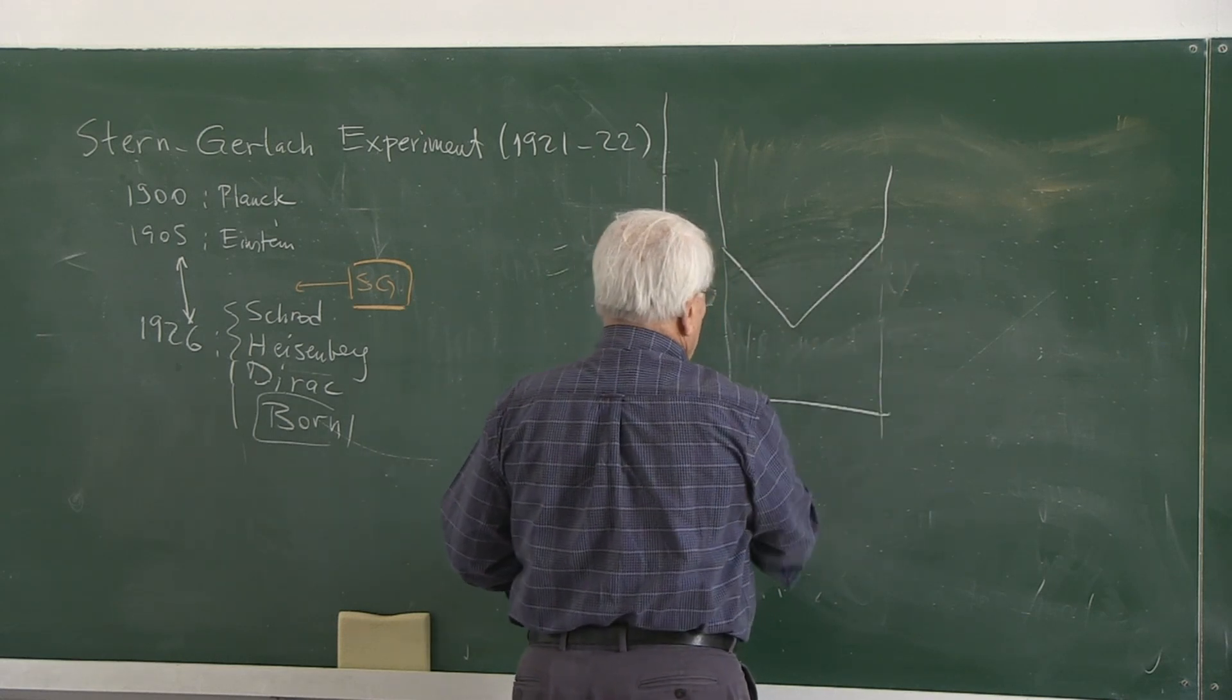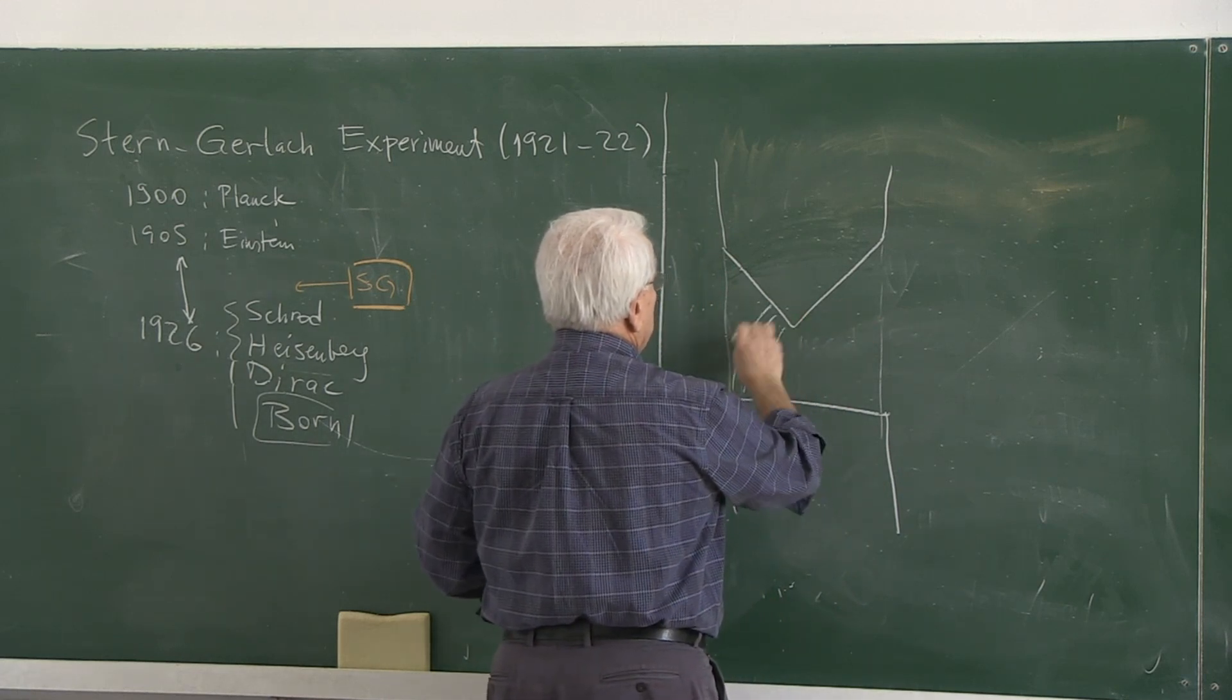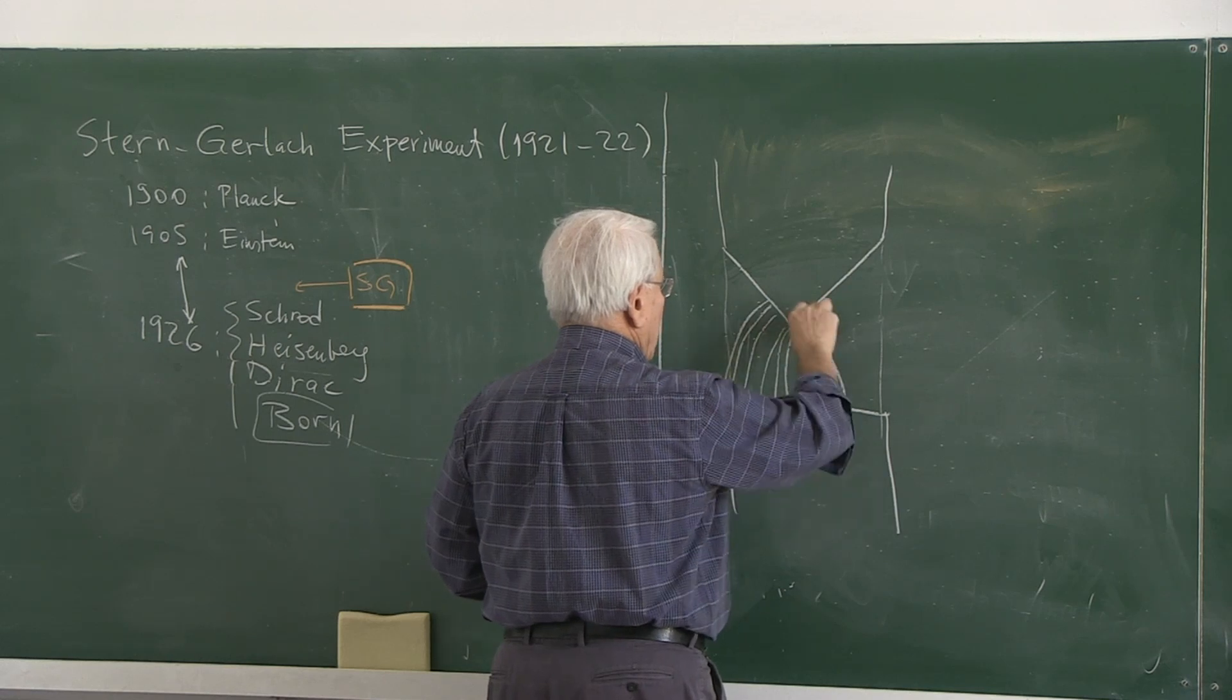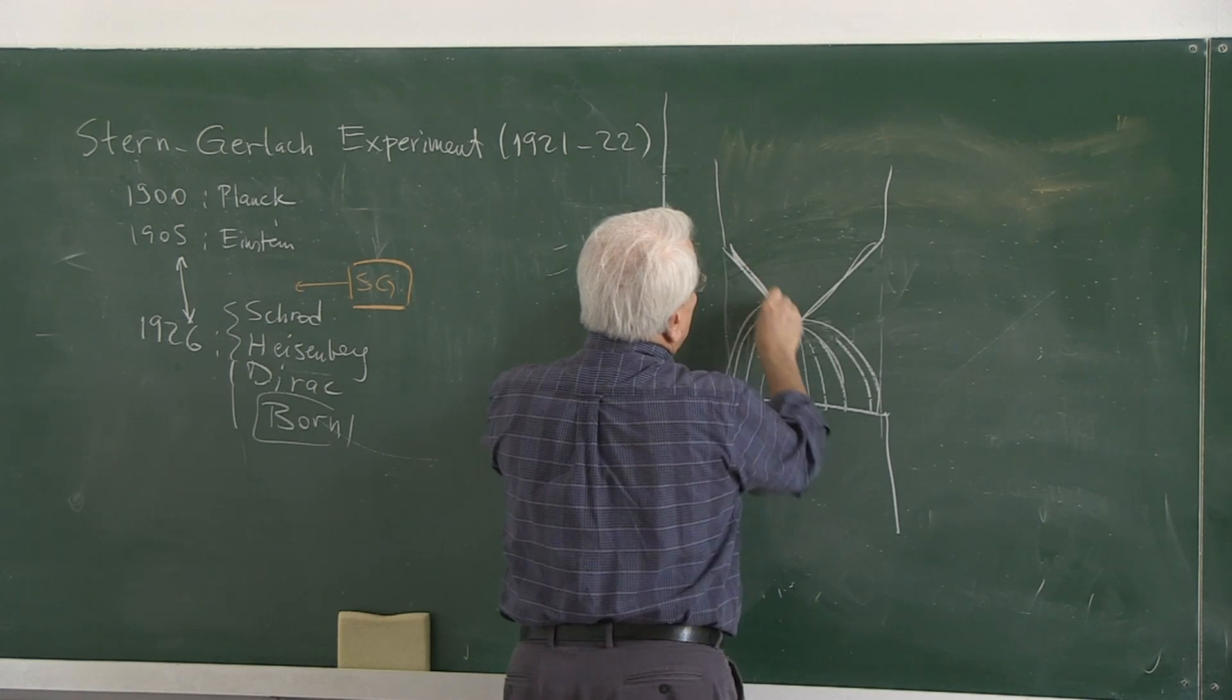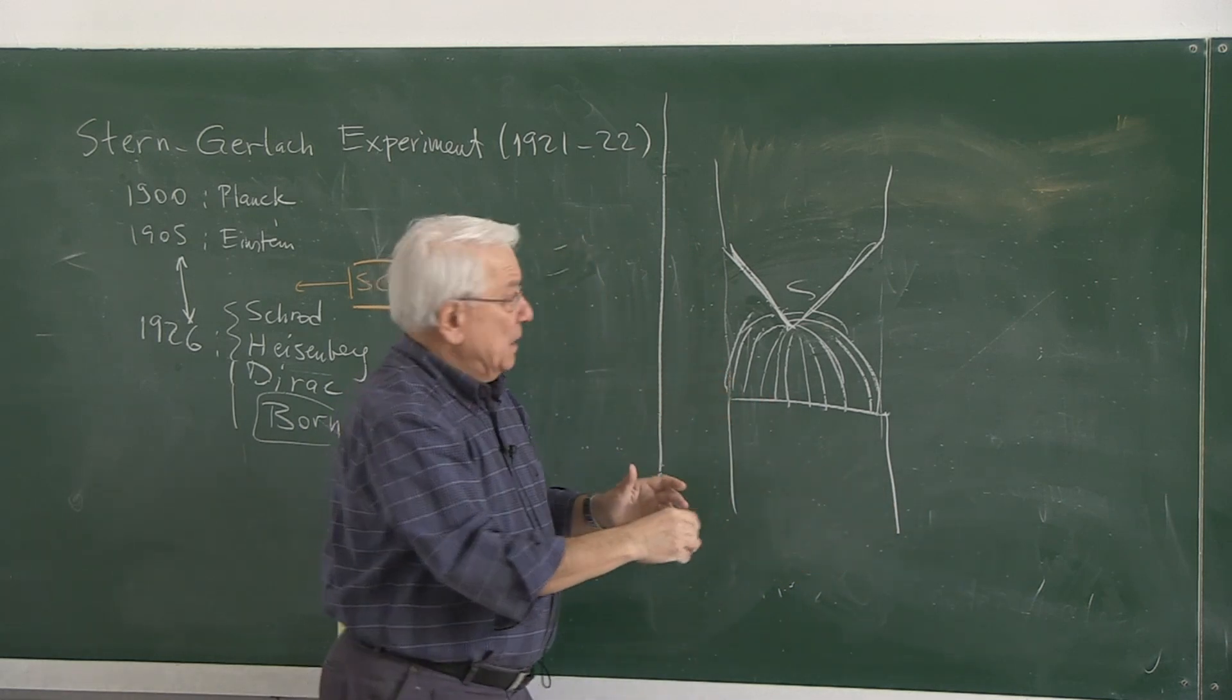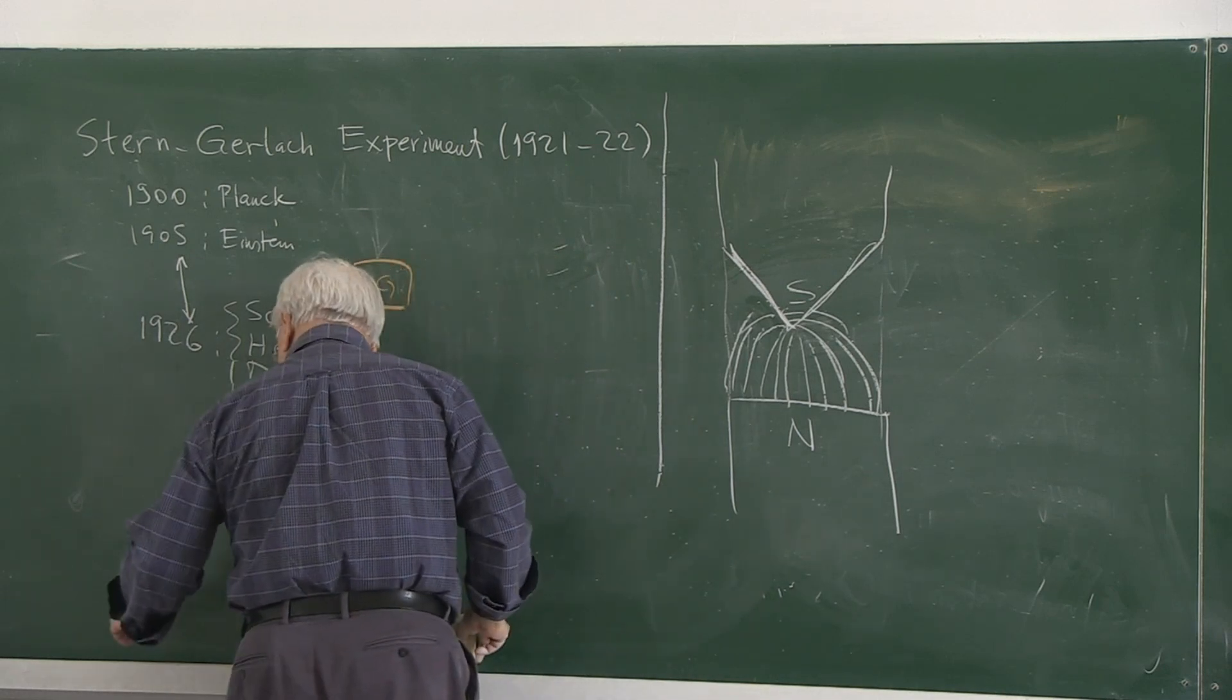Suppose we have this tip so that most of the magnetic field lines converge towards that tip. So this profile guarantees that the magnetic field going from north to south has that shape.